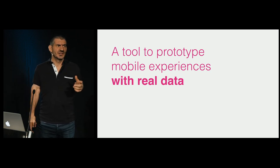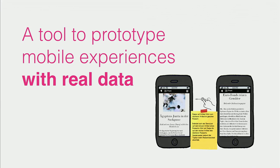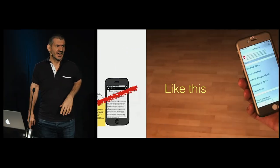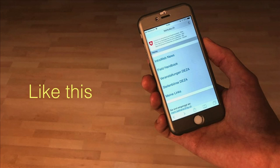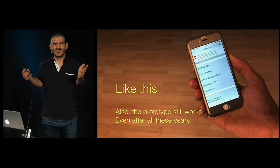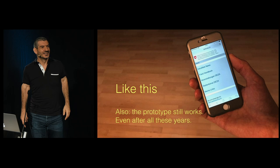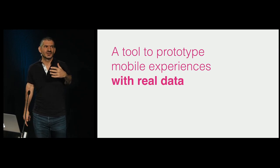What we needed was a tool to prototype that mobile experience with real data. I was totally sure this would never work — no way they would understand how it would work if we showed them Balsamiq mockups. What we needed was something you could open on a device and see what it is. This is a photo I took three days ago — the prototype is still working after all these years, which is sort of amazing. And yeah, we wanted a tool that could prototype these experiences not only for mobile, but for all sorts of experiences. And that's how Protostrap got born.